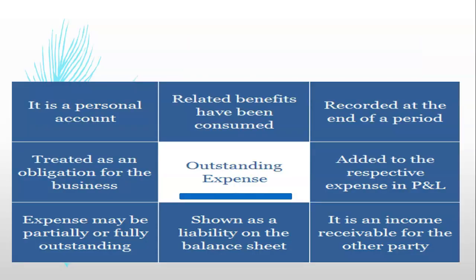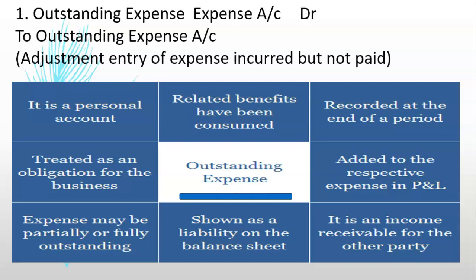Outstanding expenses are the ones which have been incurred during the current accounting period and are due to be paid. Such items can be like outstanding salary, outstanding rent, outstanding wages. The entry will be the expense account debit to outstanding expense account. For example, if I have to pay a salary, then the entry will be Salaries Account debit to Outstanding Expense.